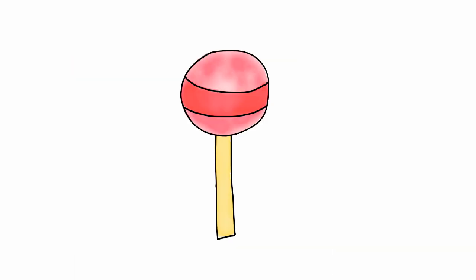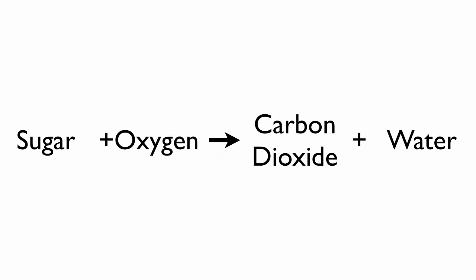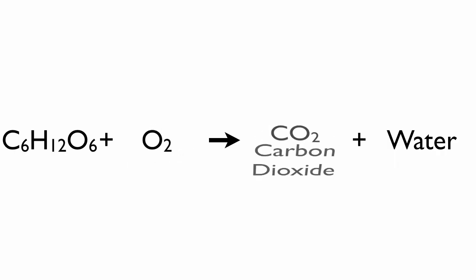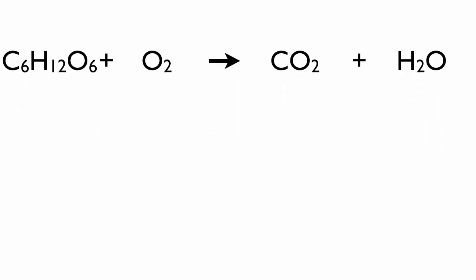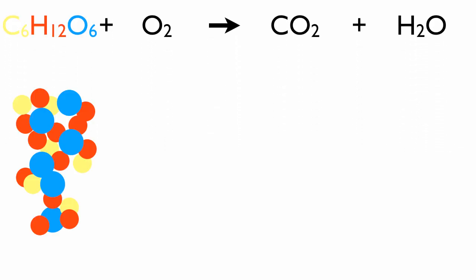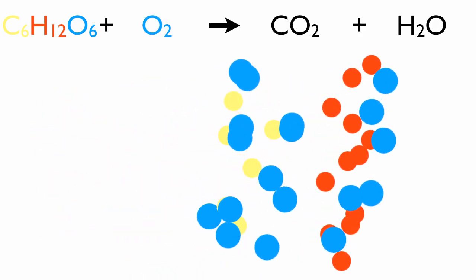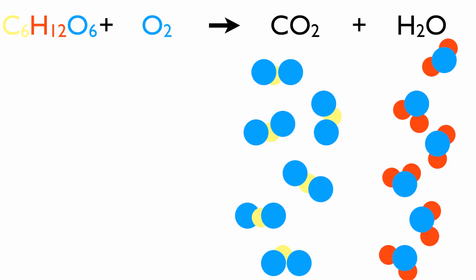Another chemical change happens when you eat sugar. Sugar enters your body as C6H12O6. When you breathe in oxygen gas, a chemical change begins. The sugar is broken down and turned into carbon dioxide and water. The sugar molecule has chemically changed.